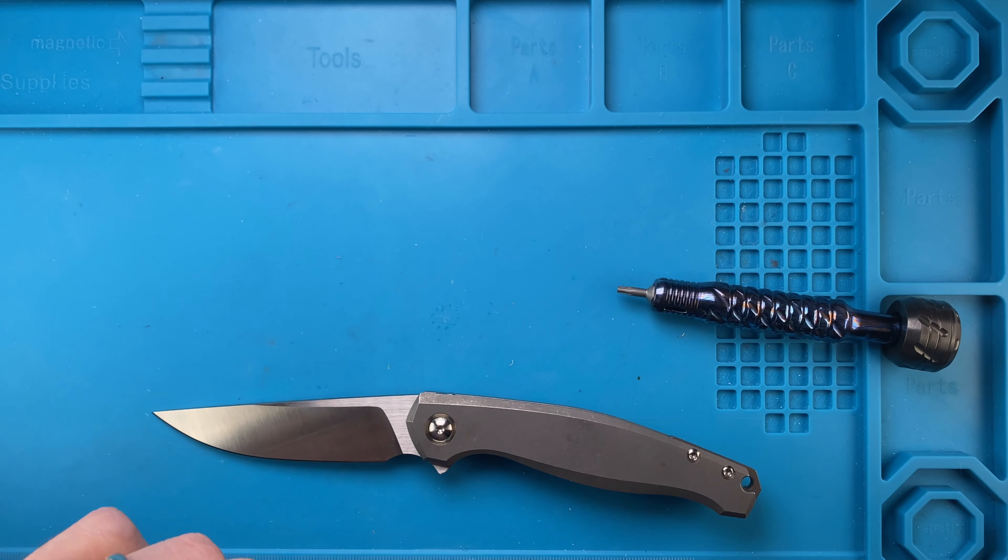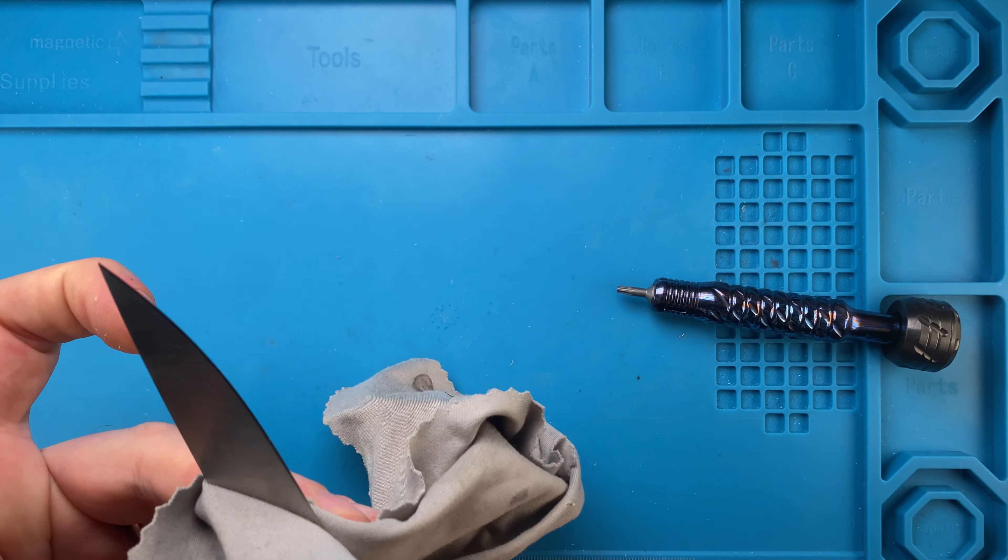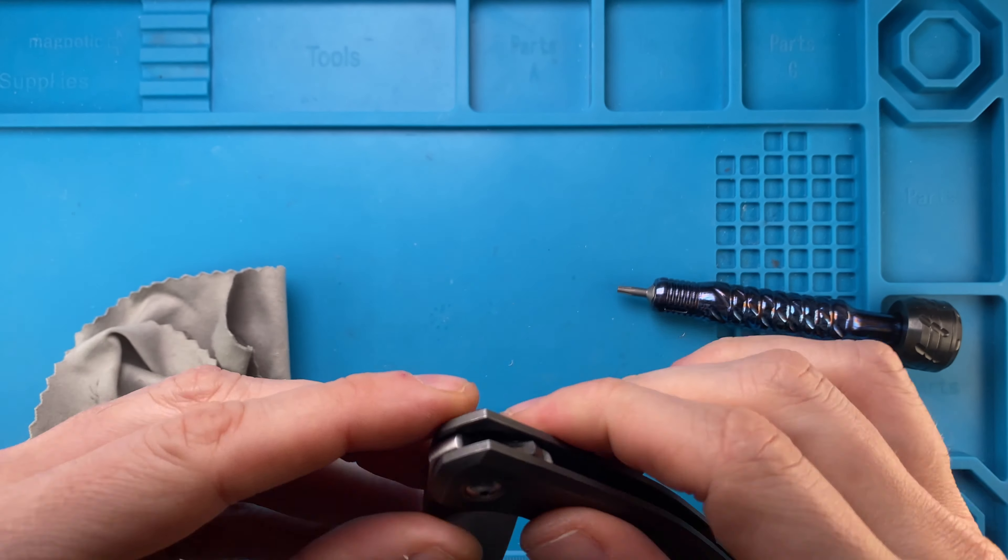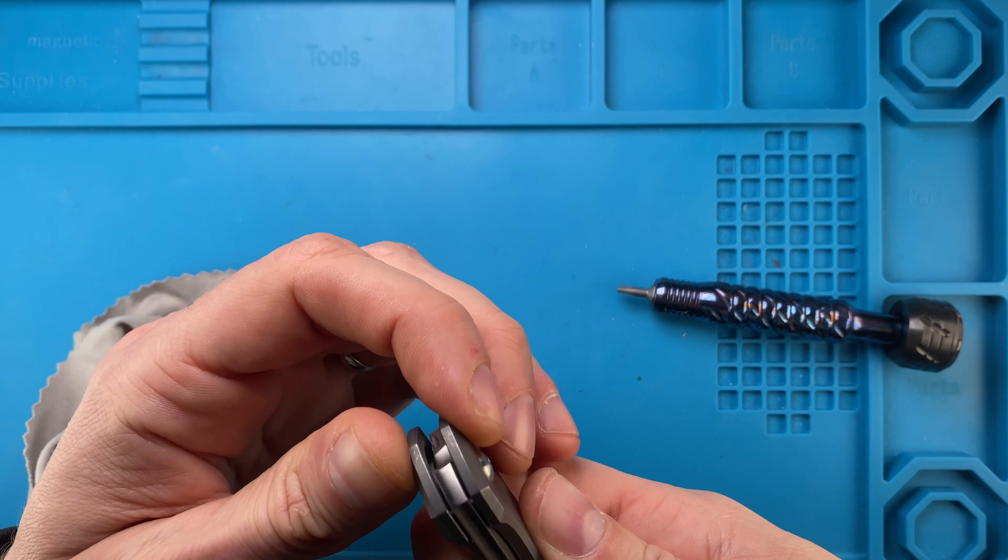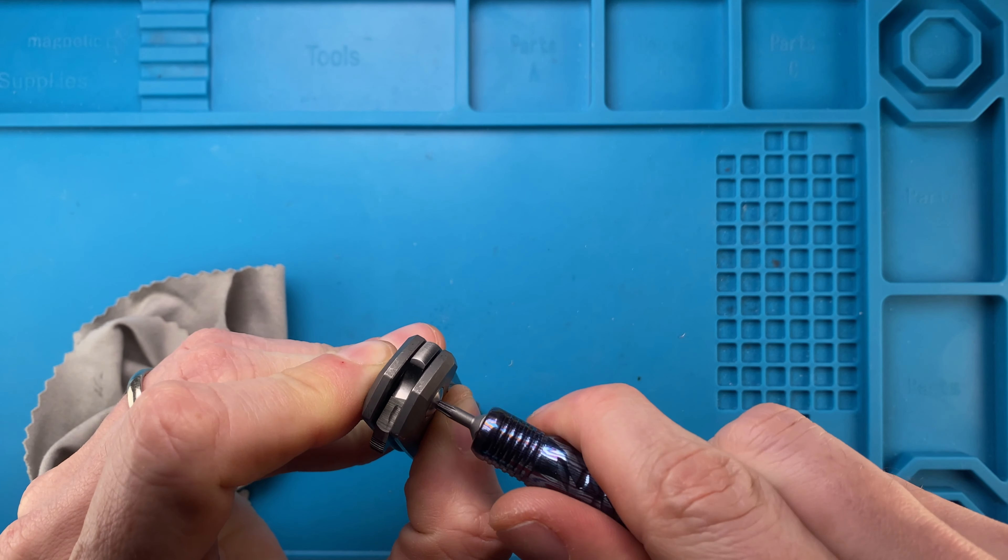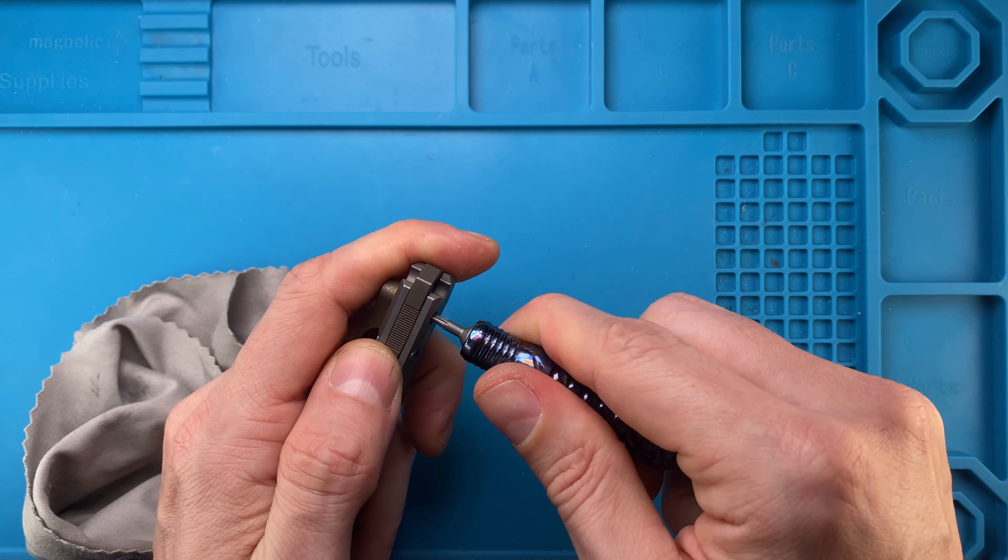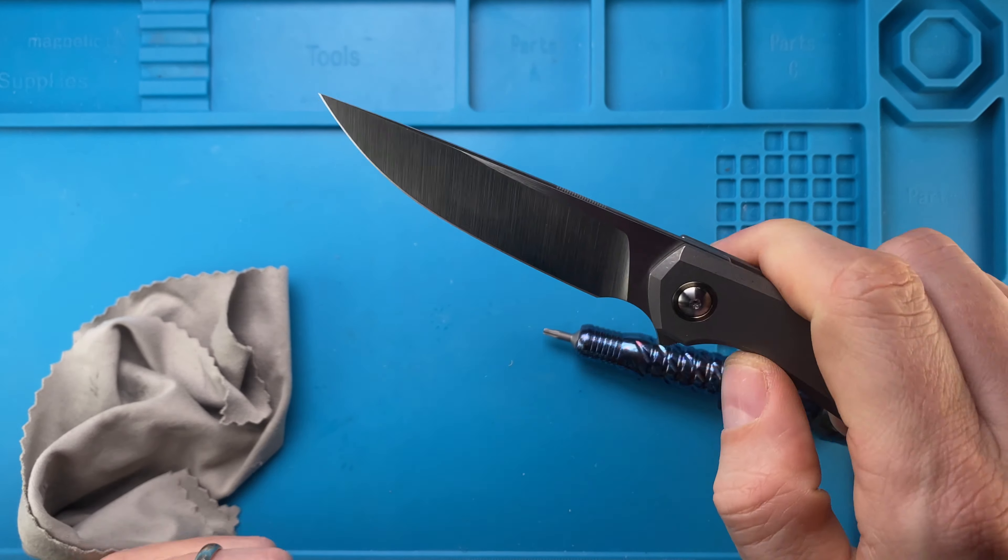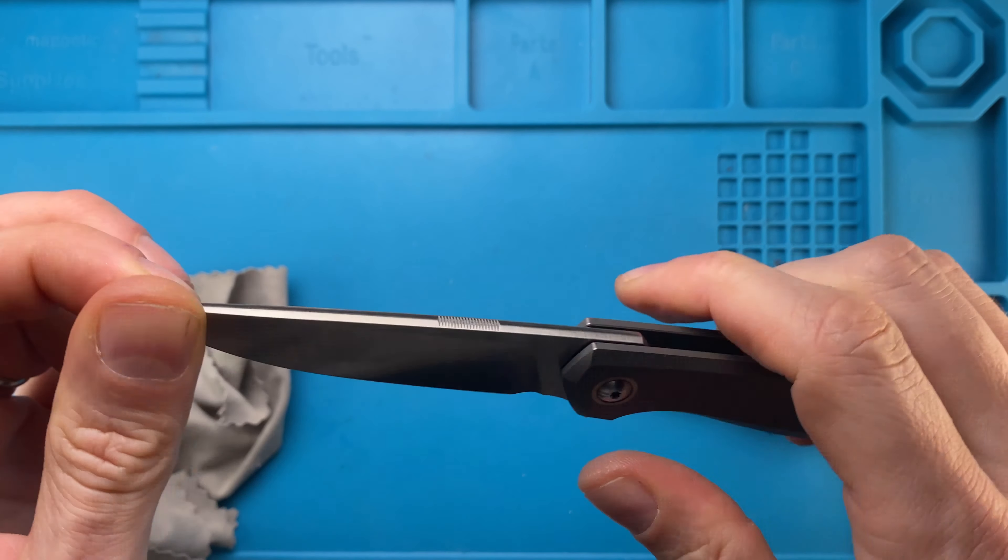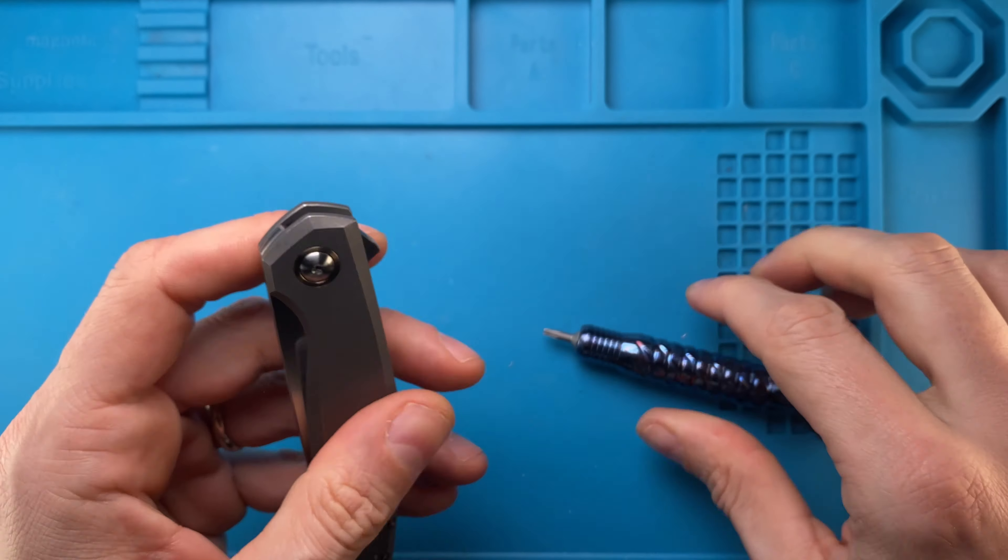So let's just clean this out, and also the blade. Of course there's some blade play. It's still centered, huh? That's good. That's very good. When the pivot is loose and the blade is centered, it's always a good indication of good tolerances, actually, so nicely done. Just tightening the handle screws. Let me see—there's no blade play. Oh, actually it's nice, it's very smooth.